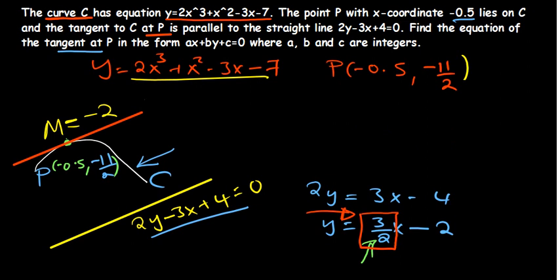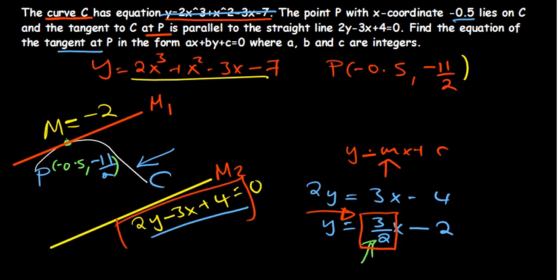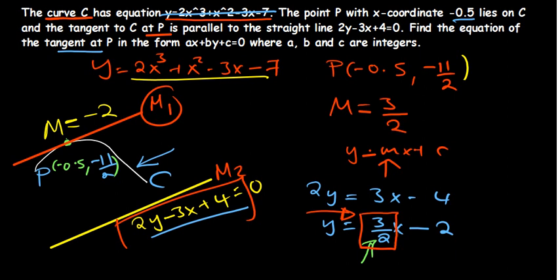The most important takeaway is to note that the gradient of the tangent equals the gradient of the line parallel to it. Even in a case where the curve's equation is not straightforward, you should rearrange the parallel line into the form y equals mx plus c and extract m as the gradient. In this case, use gradient 3 over 2, coordinate negative 0.5 comma negative 11 over 2, and find the equation of the tangent.